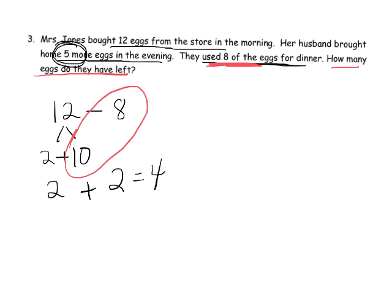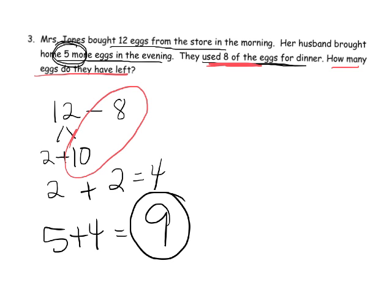But then her husband had brought five eggs in the evening, so now we're going to do 5 plus 4, and so our answer is 9.